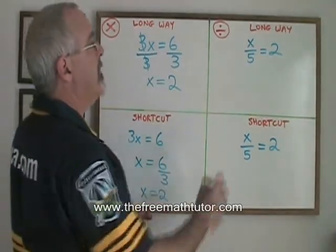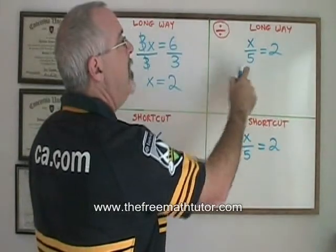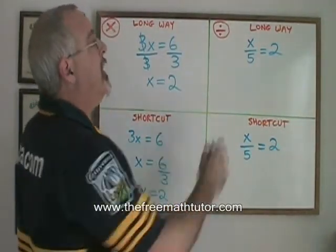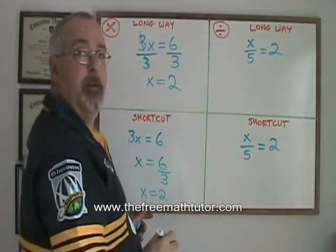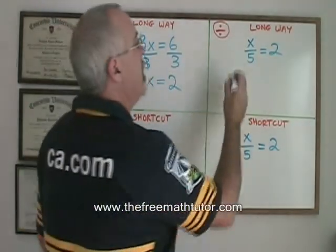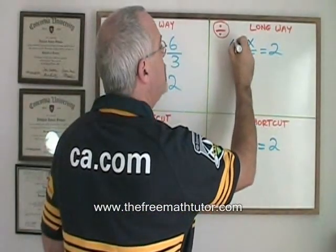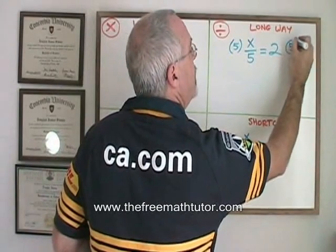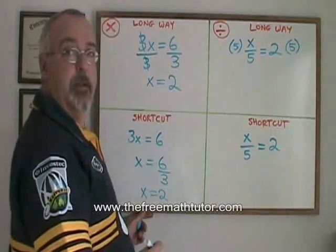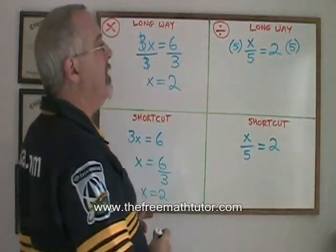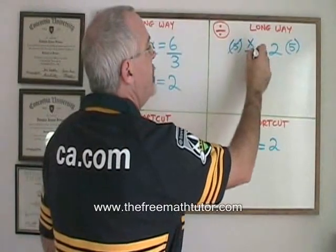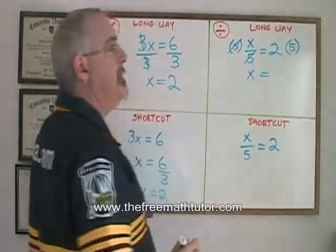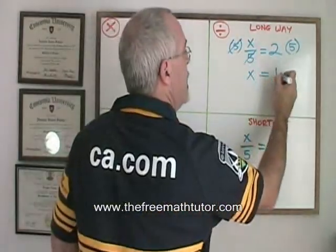With division, the long way, when I have x divided by 5 equals 2, I am dividing my x by a 5. So with the long way, I show that I am multiplying both sides of the equation by 5, because that is the opposite of dividing by 5. These 5s cancel, my x is isolated, and is equal to 2 times 5, which is 10.